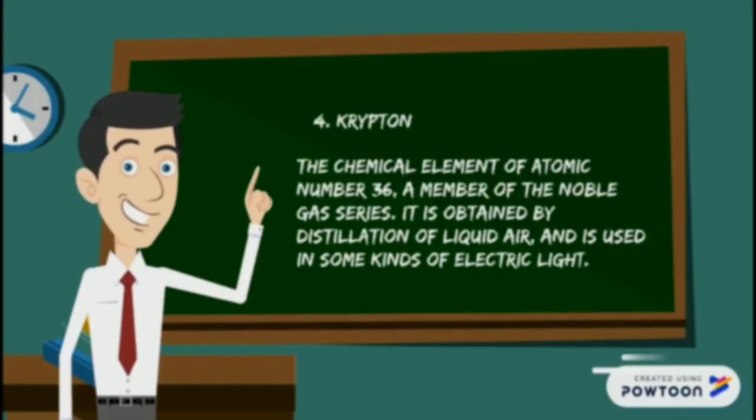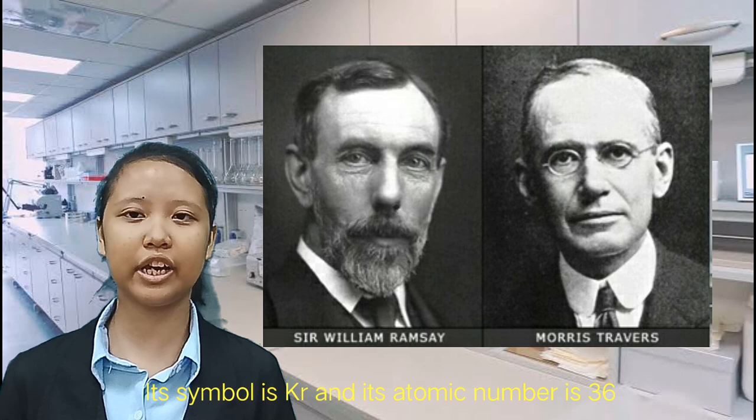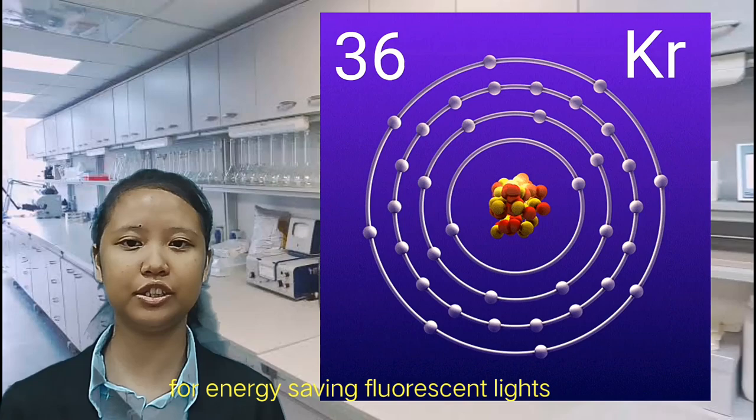The fourth noble gas in the periodic table was discovered by Sir William Ramsay and Morris William Travers. Its symbol is Kr and its atomic number is 36. Krypton is commercially used as filling gas for energy-saving fluorescent lights. The krypton gas is also combined with other gases to make luminous signs that glow with a greenish-yellow light.